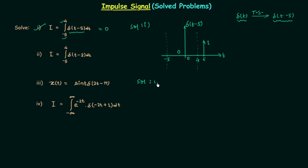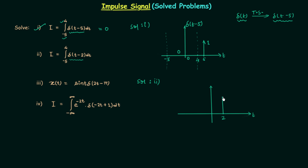In the second problem, the range of integration is the same, from -5 to 4, but the signal is different — we have δ(t-2). If you plot the waveform, the impulse is located at t = 2 with weight 1. In the range of integration the impulse is lying within the limits, therefore the result of integration is equal to 1.